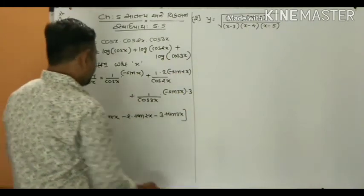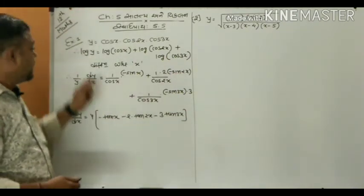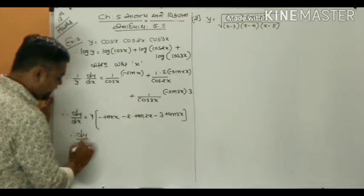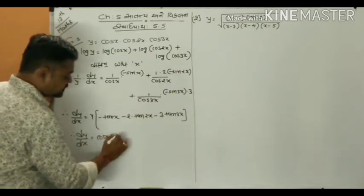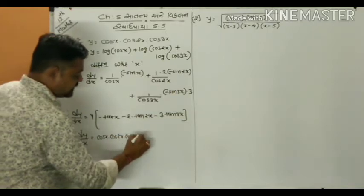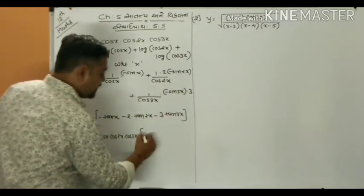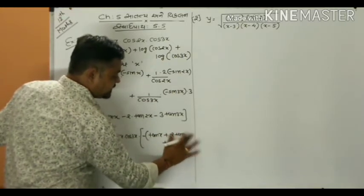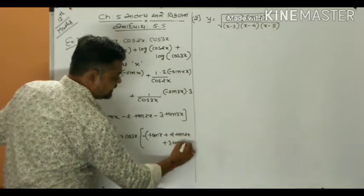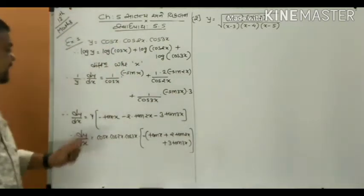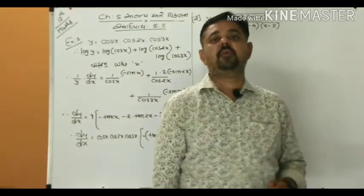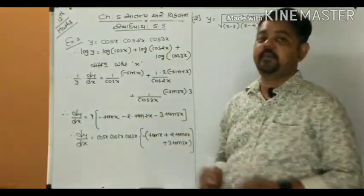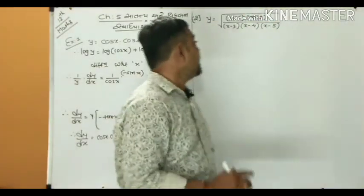Now multiply both sides by y and take minus common. Substituting the value of y: dy/dx = cos x · cos 2x · cos 3x · [−(tan x + 2·tan 2x + 3·tan 3x)]. So when dy/dx involves a product, applying log converts it to addition, making the example easier since we can differentiate each term separately.